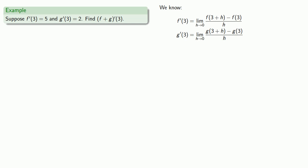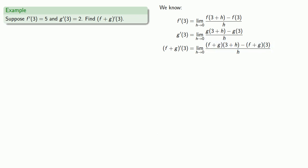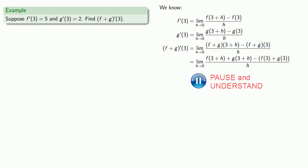Next, we want to find the derivative of f+g evaluated at 3. Bringing back our definition, we want to evaluate (f+g)(3+h) and (f+g)(3). But (f+g)(3+h) is our notation for f(3+h) + g(3+h), and likewise (f+g)(3) is our notation for f(3) + g(3).